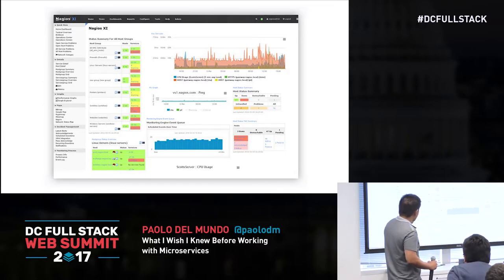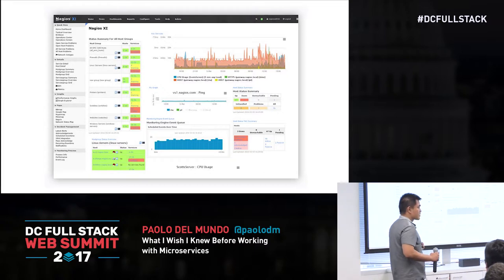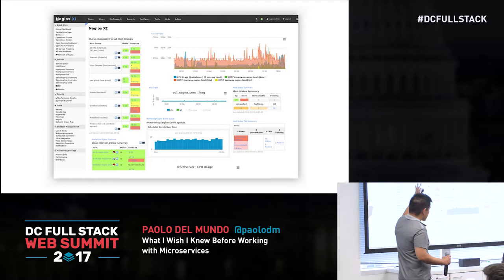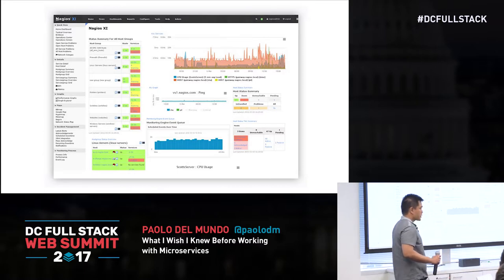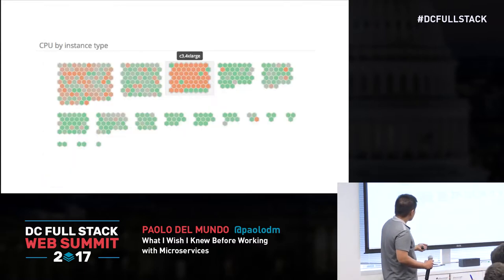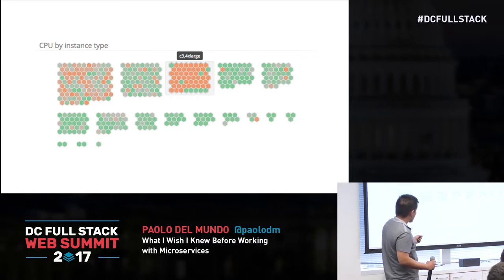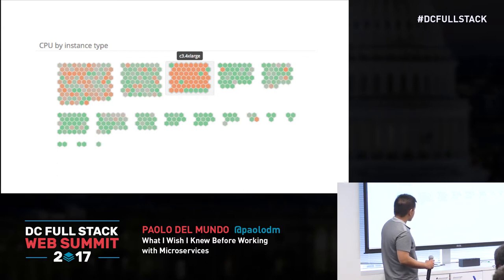This is Nagios. This would have prevented the issue I had on Saturday evening. It tells you from a bird's eye view what's going on in your network. Here's another tool — this is Datadog. I like it because it's so simple. You can see exactly where things are happening and drill down to it.